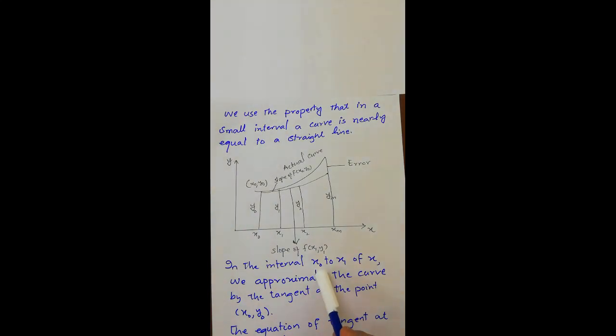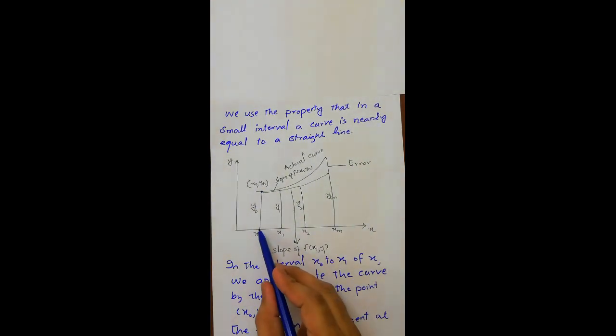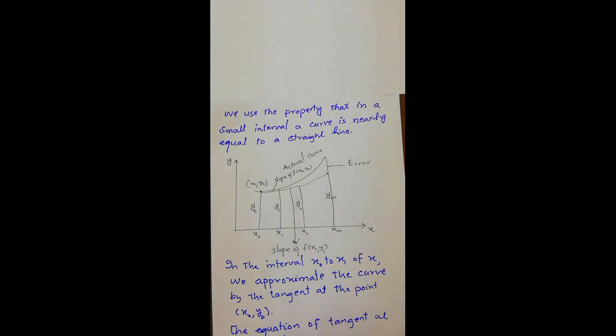In the interval x0 to x1, in this first interval, we approximate the curve by the tangent at the point x0, y0. This is the point x0, y0 in this interval.